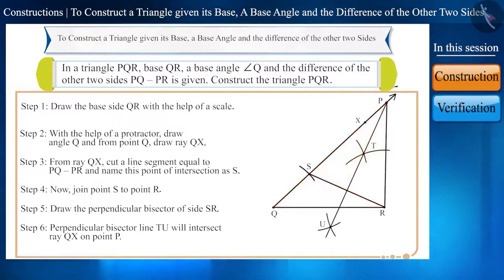Thus friends, the constructed triangle PQR is the same triangle which we wanted to construct. Here, you can see that side PQ is greater than side PR and the difference of PQ minus PR is represented by QS.